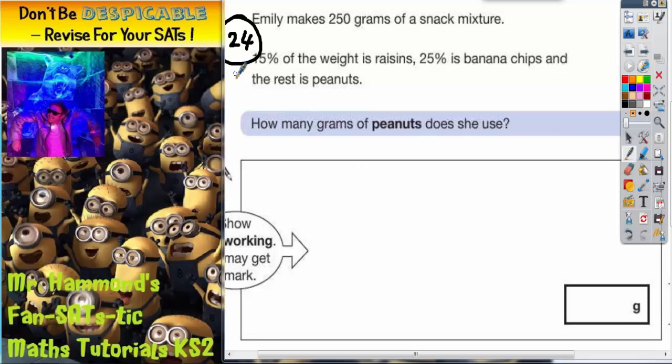Question 24, it is the last question on the paper, so you would expect it to be a level 5 question. But with a little bit of clear thinking, we should be able to get the marks. It says Emily makes 250 grams of snack mixture. 15% of the weight is raisins, 25% is banana chips, and the rest is peanuts.